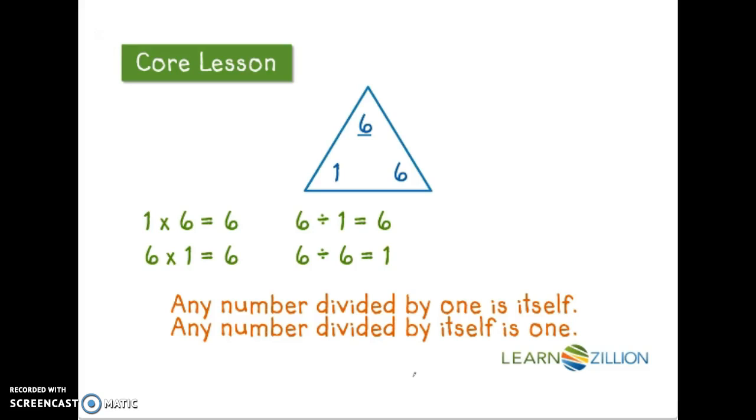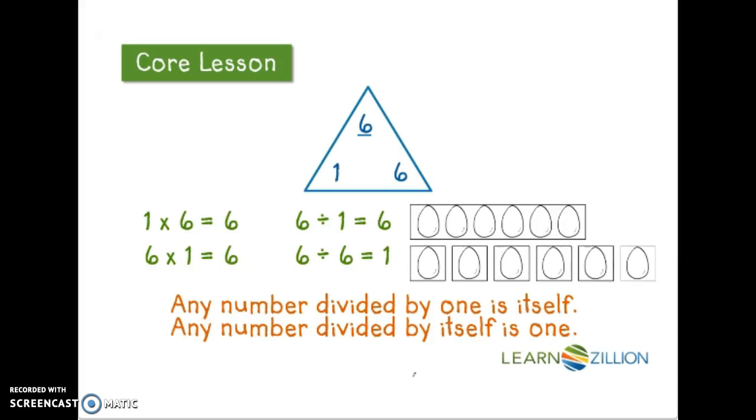Let's see how this works with some eggs. If I have 6 eggs and I separate them into one group, that one group has 6 eggs in it. If I take the same 6 eggs and I separate them into 6 groups, each group has just one egg in it. Any number divided by 1 is itself. Any number divided by itself is 1.